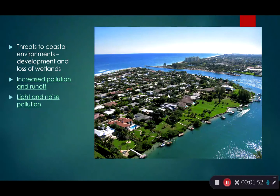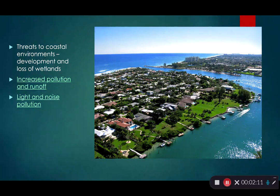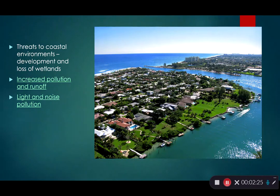Some of the threats to coastal environments include development and loss of wetlands. Wetlands serve as buffers and sponges for coastal hazards — during hurricanes, storms, and flooding events, they are major protection zones that can minimize damage. They also provide significant habitat and ecosystem services, so losing them is an enormous impact.